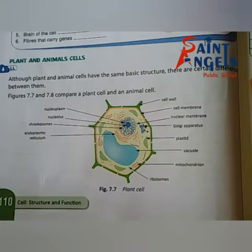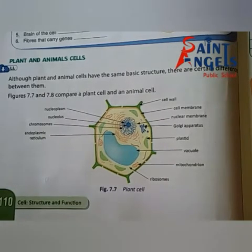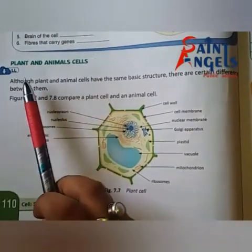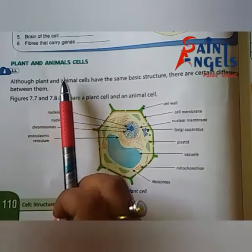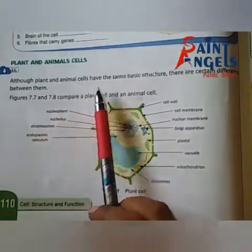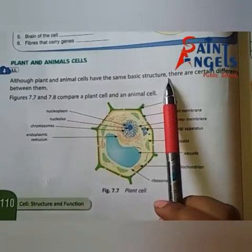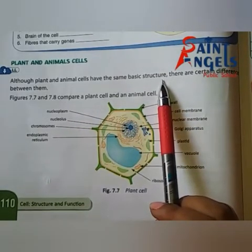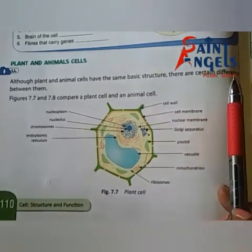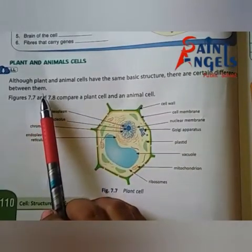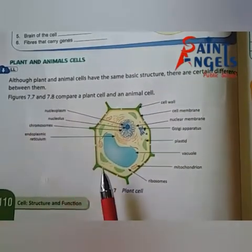In our previous class we discussed about the structure of a cell. Today we will discuss about plant and animal cells — plant cell (paadap kosika) and animal cell (jantu kosika). Although plant and animal cells have the same basic structure, there are certain differences between them.